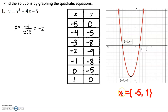We write those solutions in a set using curly brackets to indicate a set of values. The set of solutions for x contains negative 5 and positive 1.